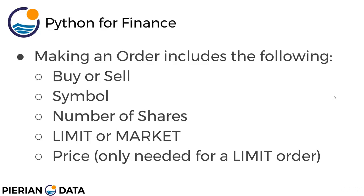Now for a sell order, it's essentially the same thing except the limit is how low you're willing to go to sell it. So you end up saying buy or sell, symbol, number of shares, limit, and then price. Now typically you're just going to do what's known as a market order, and in that case there's no price needed — you're just going to buy or sell at whatever the current market will accept.